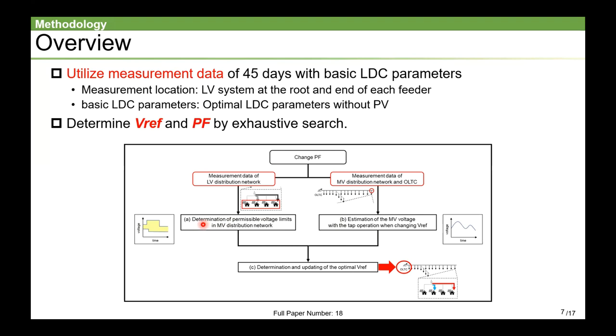First, in step A, the permissible voltage range of MV nodes are determined from every customer's voltage information. Next, in step B, we estimate how the MV voltage would behave if the values of Vref were changed. Finally, in step C, we determine the parameters that voltage at measurement points is least likely to violate by exhaustive search. From the next slide, each step will be explained in detail.